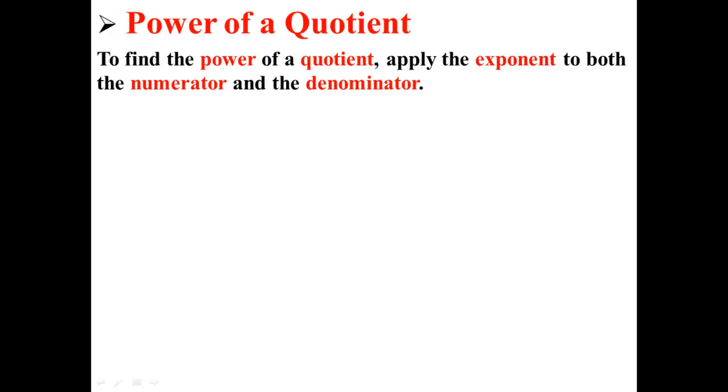Now let's find the power of a quotient. To find the power of a quotient, apply the exponent to both the numerator and the denominator. For example, if you have a divided by b raised to the sixth power, that's the same thing as saying a to the sixth power divided by b to the sixth power.